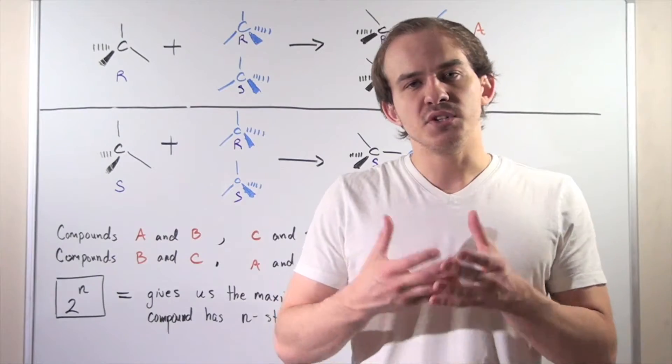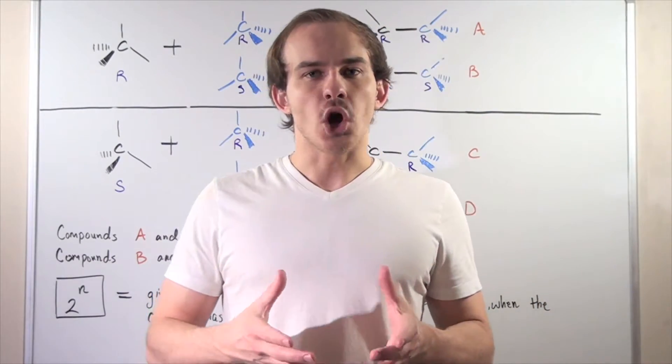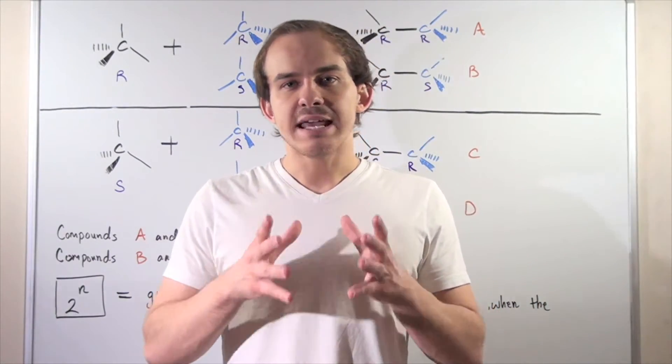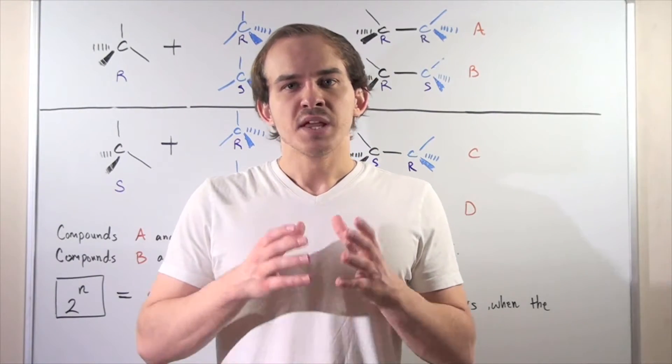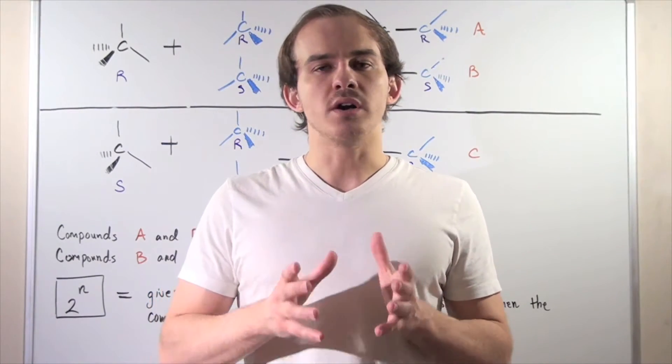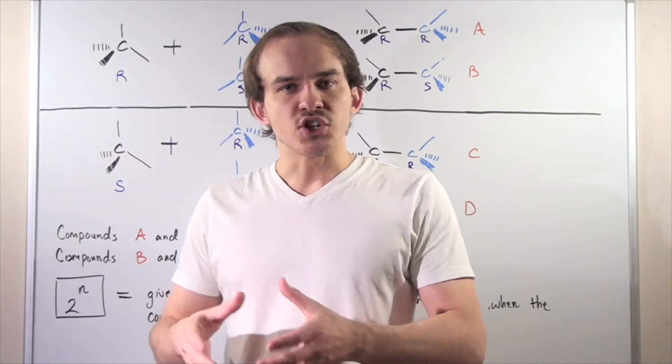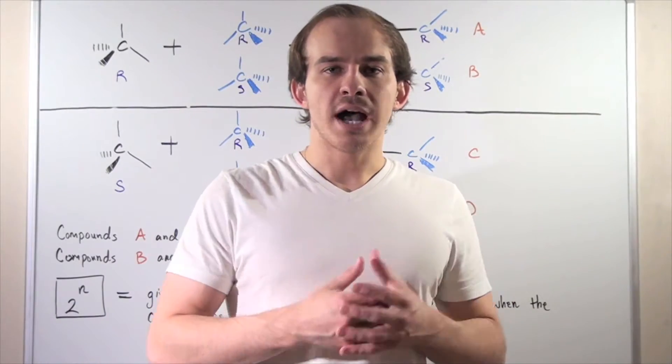So for example, we spoke about enantiomers. And enantiomers are compounds that have the same exact molecular formula but they are mirror images of one another. So enantiomers are one type of stereoisomers.